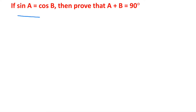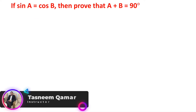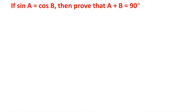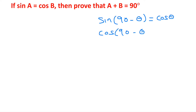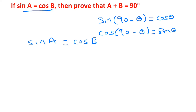If sin A equals cos B, then prove that A plus B equals 90 degrees. We know that sine and cosine are complementary values: sin(90 minus theta) equals cos theta, and cos(90 minus theta) equals sin theta. So we will convert one of these angles into the complementary angle. Since sin A equals cos B, we can write it as cos(90 minus A) equals cos B.